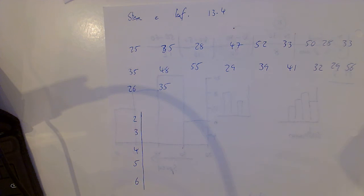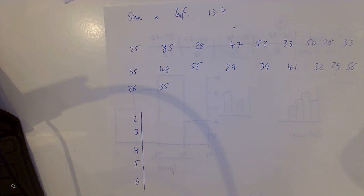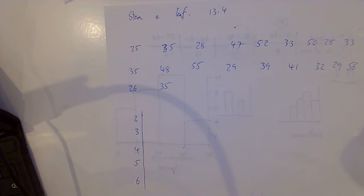Okay, 13.4 stem and leaf. Here's a piece of data, let's say they're the ages of 21 people who go to cinema. How many people are there? There's 21. What's the mode? 35 is the most common age. For the median, you have to put it in order and find the middle one.